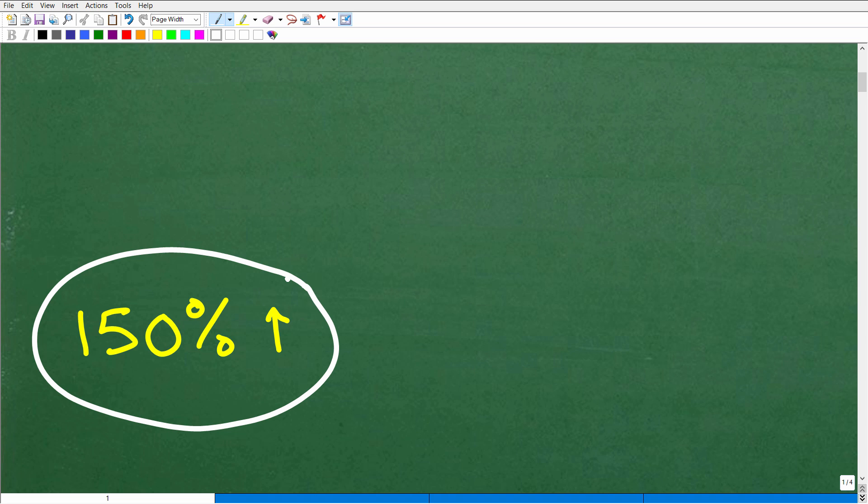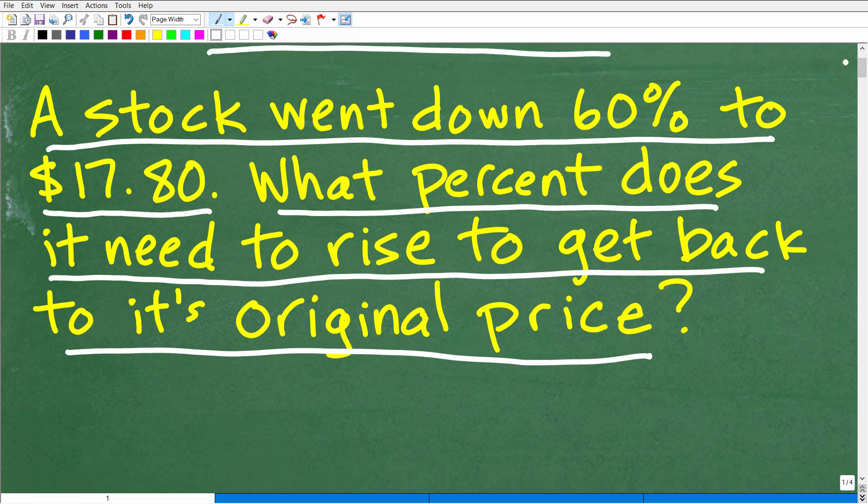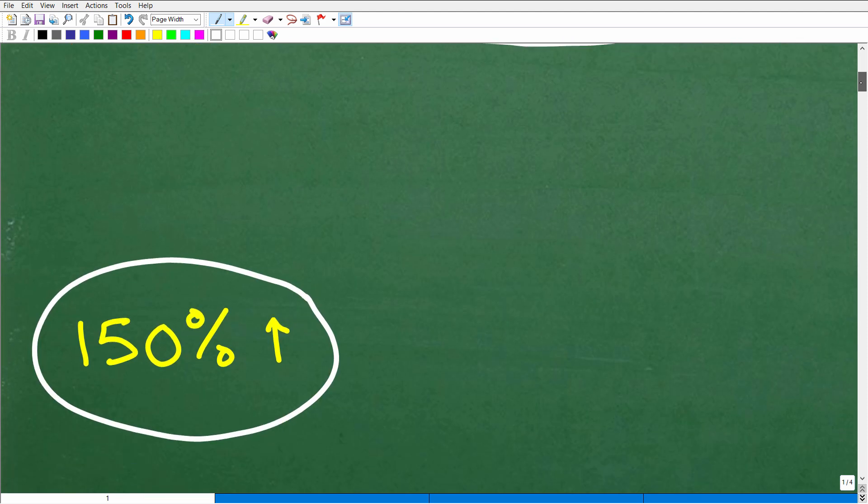That stock will need to rise 150 percent to get back to its price before it fell 60 percent. If you're a little bit confused, I'm going to walk through this step by step. Let's just go back to the problem real fast. What is the first thing you want to do when you're solving any math word problem? You want to read the problem more than once.